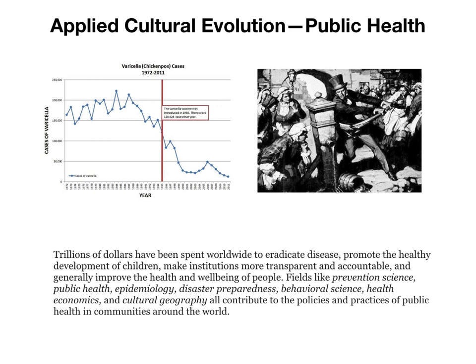Let me give a couple of examples to show this isn't really a new idea — even though what's been done in the past often wasn't called applied cultural evolution, you can understand it through this lens. A great example is the field of public health. Over the last 100 to 150 years, literally trillions of dollars have been spent worldwide to eradicate disease, promote the healthy development of children, and make institutions more transparent and accountable. Fields like prevention science, epidemiology, disaster preparedness, behavioral science, cultural geography, and public policy are all areas where attempts to make social change more rigorous and effective have built a huge body of practices and case studies showing that, at least within limited capacities, it can be done effectively.